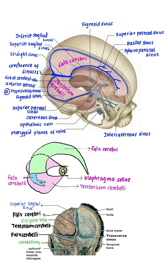Tentorium Cerebelli: It is a tent-shaped fold of dura mater. It forms the roof of the posterior cranial fossa and separates the occipital lobe from the cerebellum. It has an inner free margin which is U-shaped, enclosing the tentorial notch for the passage of the midbrain. It has an outer attached margin which is convex. In the posterior part of the attached margin, the transverse sinus is present.